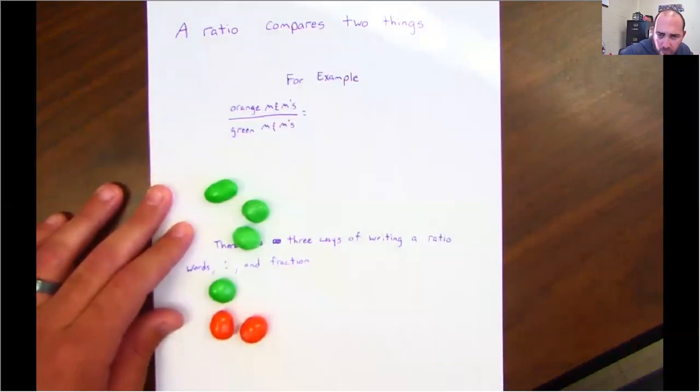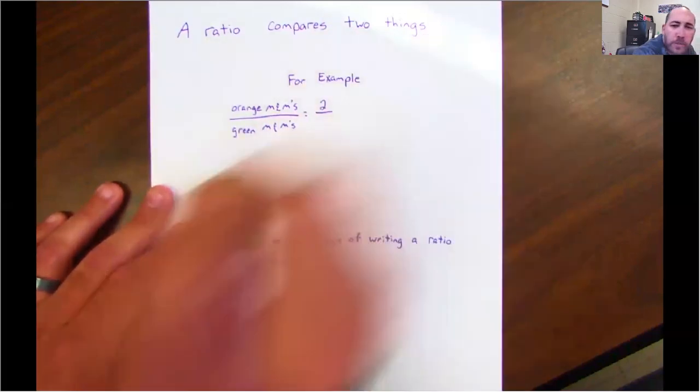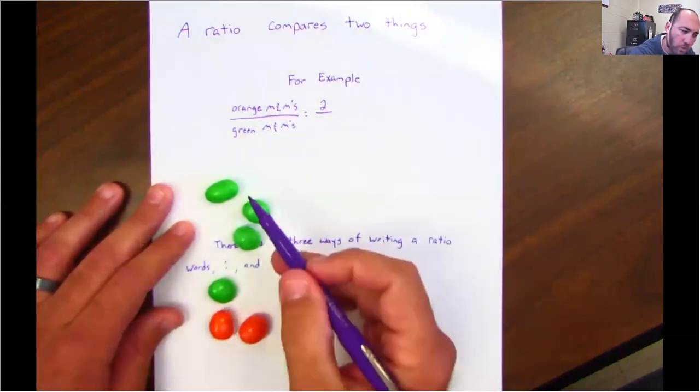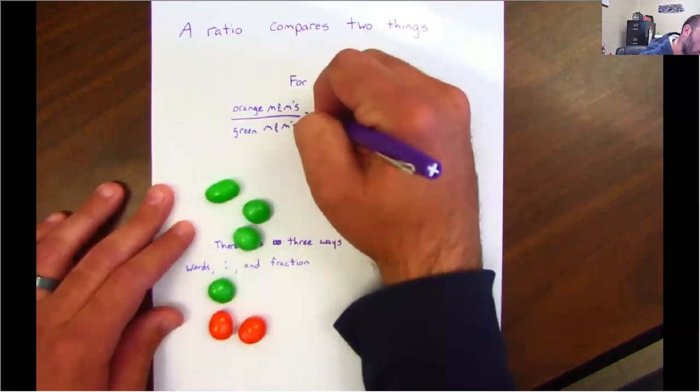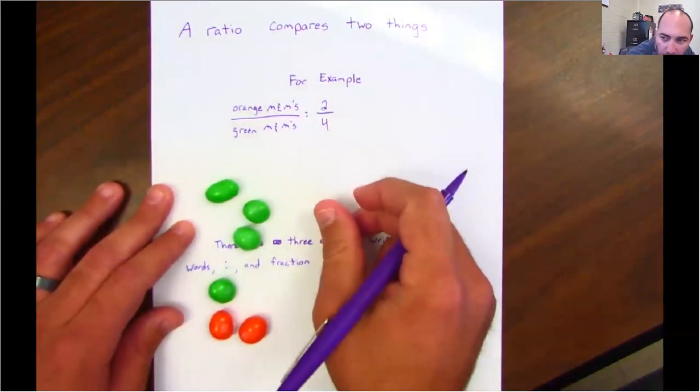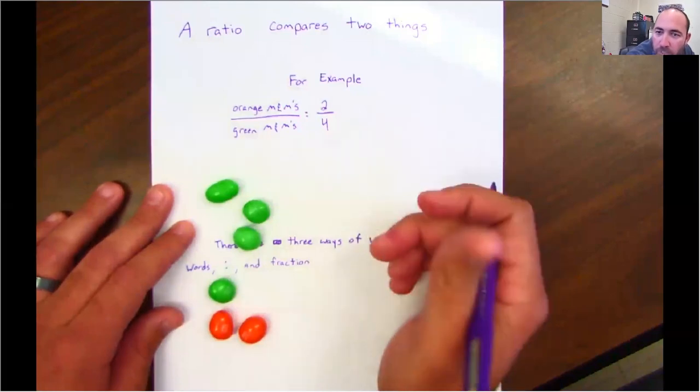So how many orange M&Ms do we see? Well, two. How many green M&Ms do you see? Well, there's four. Guys, there's a ratio. Literally, that's your ratio.